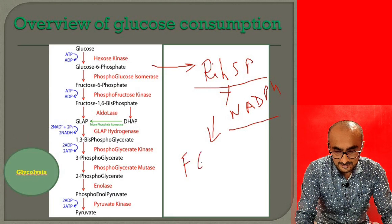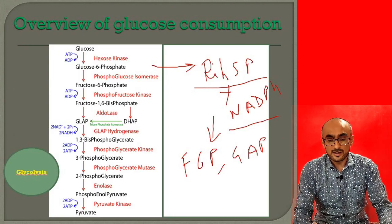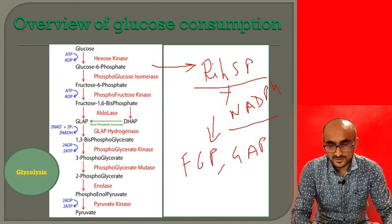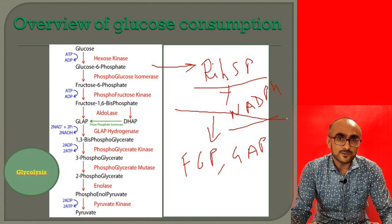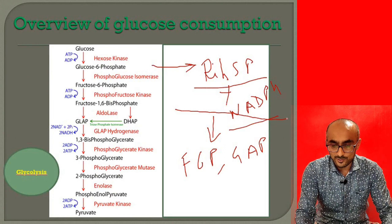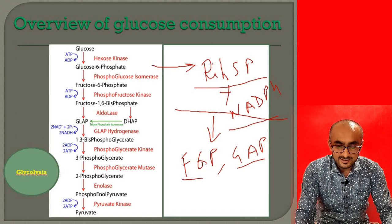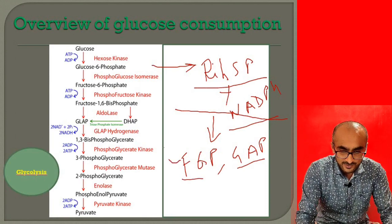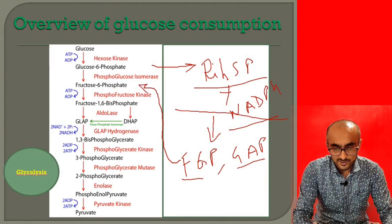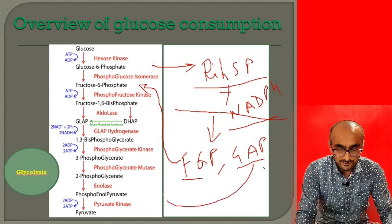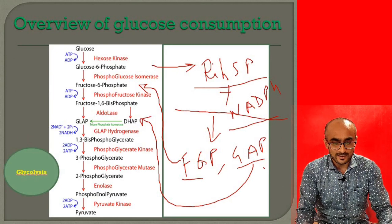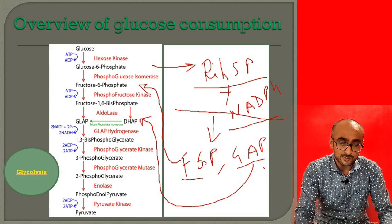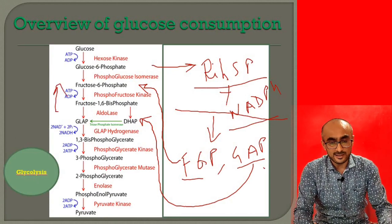Along with ribose-5-phosphate and NADPH, fructose-6-phosphate and glyceraldehyde-3-phosphate are two other products of the hexose monophosphate pathway. If a cell requires NADPH or ribose-5-phosphate, the pathway stops there. But if ribose-5-phosphate is not needed, fructose-6-phosphate enters glycolysis at the second reaction, and glyceraldehyde-3-phosphate also enters glycolysis to give energy. If energy is also not needed, both are converted back to hexose sugars like glucose or glucose-6-phosphate.